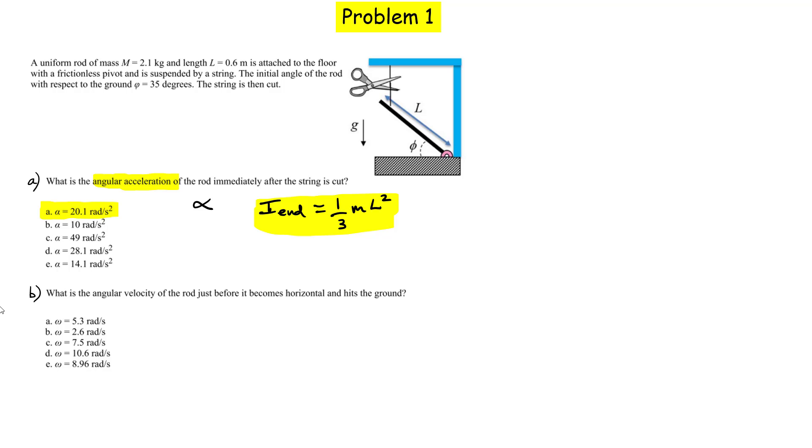So what students often do for this problem is they write down kinematic equations. They might write this one down. They might say, well, I have some angular displacement. Angular displacement equation looks like this, and maybe I can solve for the time and then substitute and solve for omega final, right? However, this approach is actually wrong because alpha is not constant for this problem. Alpha changes as the rod's angle changes.